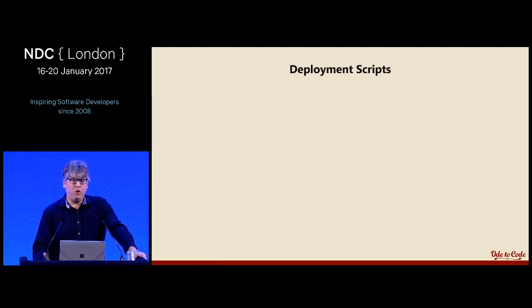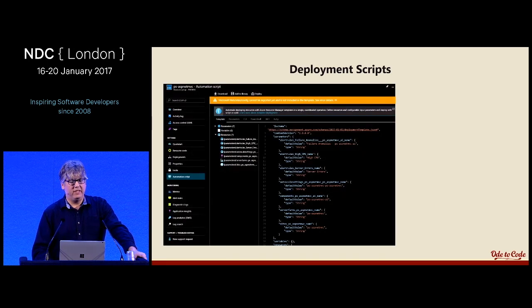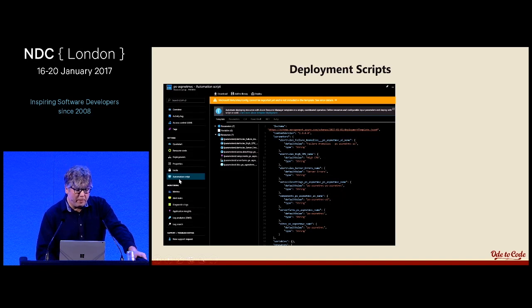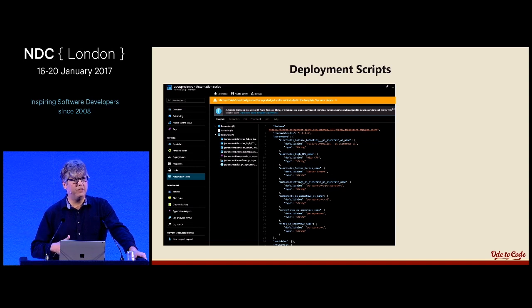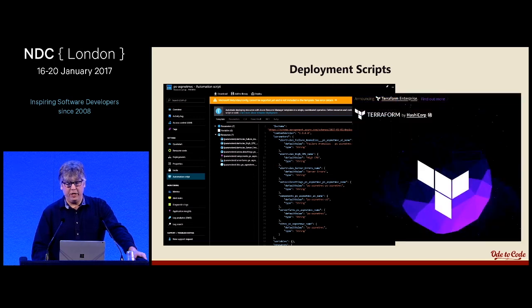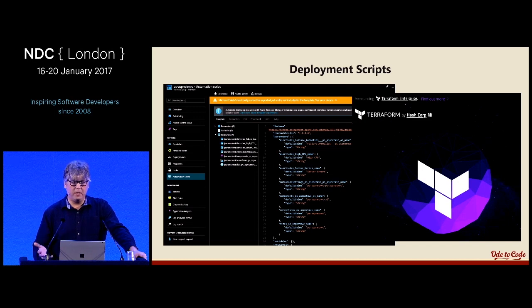I also check in deployment scripts. If you're using Azure, one approach is to download the Azure Resource Manager template and a PowerShell script — Azure can produce these when you right-click a resource group and go to the automation script. I take those templates and check them into a deployment folder in Visual Studio so they can be used in a build or deployment process. You might also consider a tool like Terraform, which is very good at automating infrastructure across multiple platforms — it supports Azure, AWS, and a number of other environments.